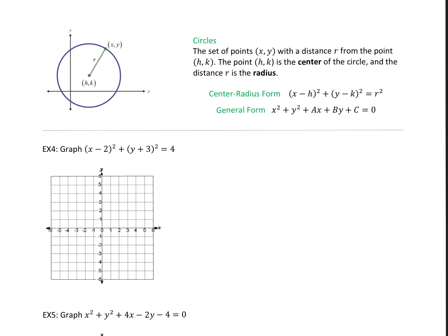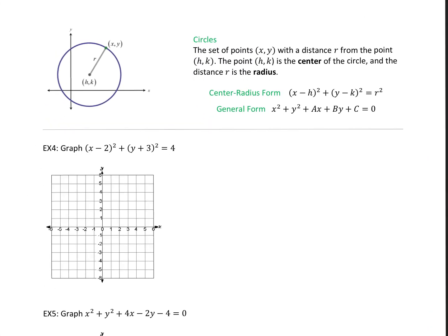Now we're taking a look at circles. A circle is a set of points (x, y) with a distance r from the point (h, k), where (h, k) is the center and r is the radius. We have two different forms: the center-radius form, which is nice because I can pull off the center and radius directly, and the general form, which is less useful. For circles, both x and y are squared and have the same coefficient — in this case, 1.